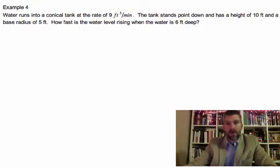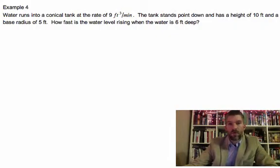So, water runs into a conical tank at the rate of 9 feet cubed per minute. Sounds like a change in volume. The tank stands pointing down and has a height of 10 feet and a base radius of 5. How fast is the water level rising when the water is 6 feet deep?